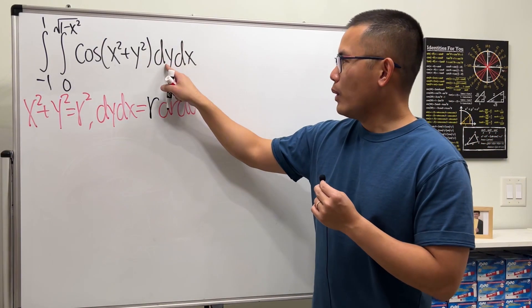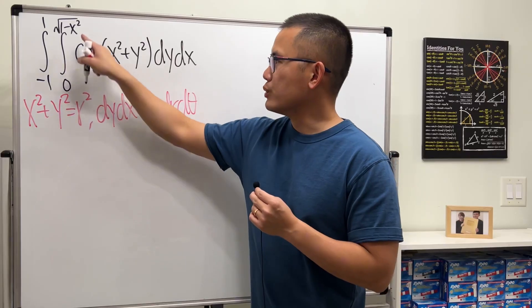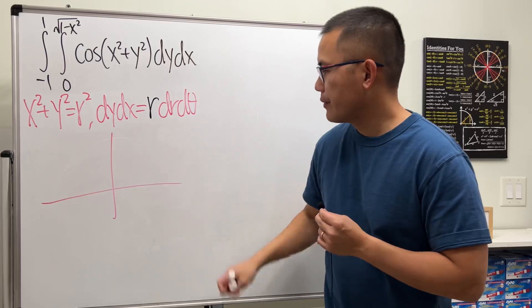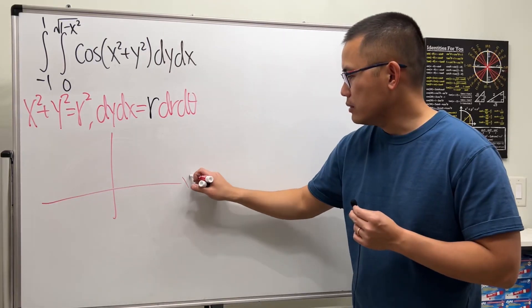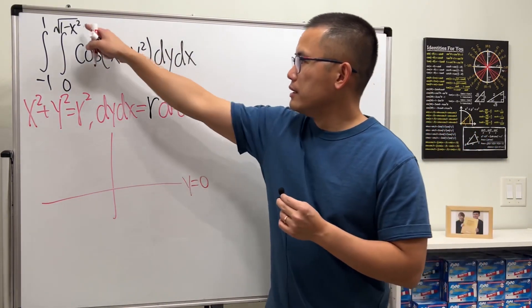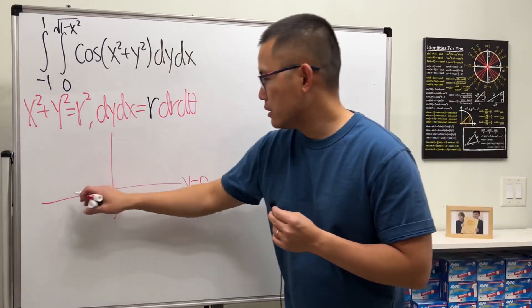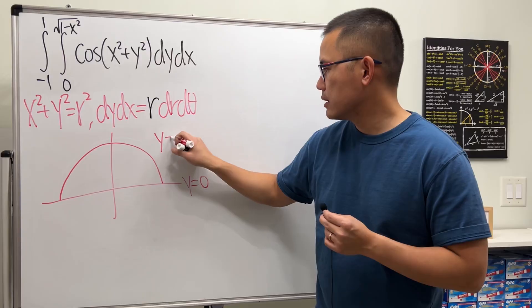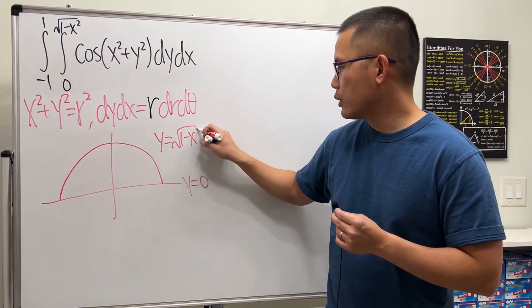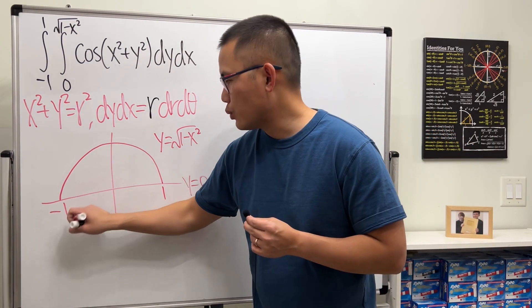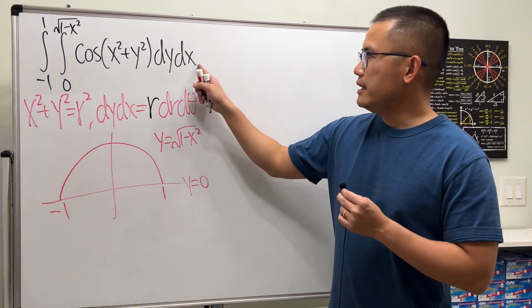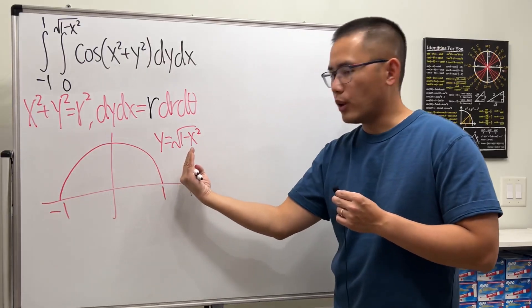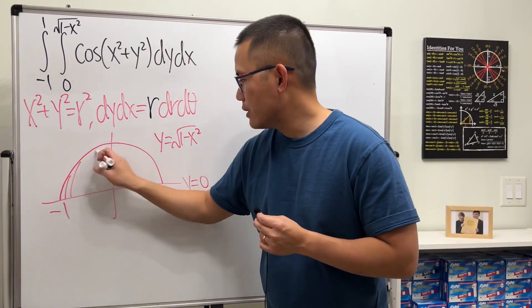In the y world, we are going to go from 0 to square root of 1 minus x squared. Let's take a look at the picture real quick. This is y equals 0. Square root of 1 minus x squared is a semicircle like this, and the radius is 1, so we have 1 here and negative 1 here. In the x world, we go from negative 1 to 1, so we want the whole thing from here to here.